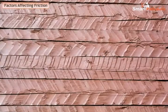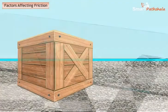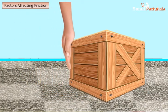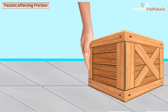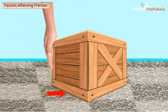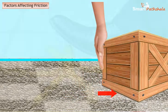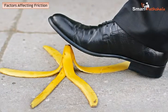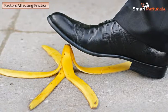A rough surface produces more friction compared to a smooth surface. For example, it is difficult to pull a heavy box along a woollen blanket than along a tiled surface. This is because of the greater frictional force produced by the woollen blanket due to its rough surface. We will slip when we step on a banana peel on the road due to the less friction between the banana peel and the surface of the road.